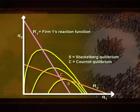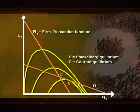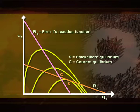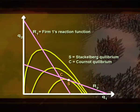Firm 1 is the leader who decides his reaction curve R1 to sell his product. Firm 2 is the follower who decides his reaction curve R2 considering the decision of the leader. At equilibrium, firm 1 abandons his reaction curve R1. Instead, he observes his rival's behavior along reaction curve R2 and then chooses point S, which is best for him, as the highest isoprofit curve is just tangent to R2. Choosing any other point on R2 means lower profit for the leader. Thus, Stackelberg equilibrium is a perfect equilibrium of the game.